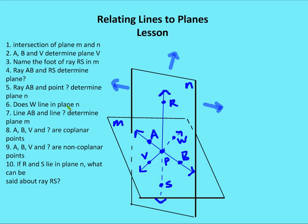Sixth, does W lie in plane N? No — W does not lie in plane N; it lies in plane M. Seventh, line AB and line VW determine plane M, because two intersecting lines determine a plane.